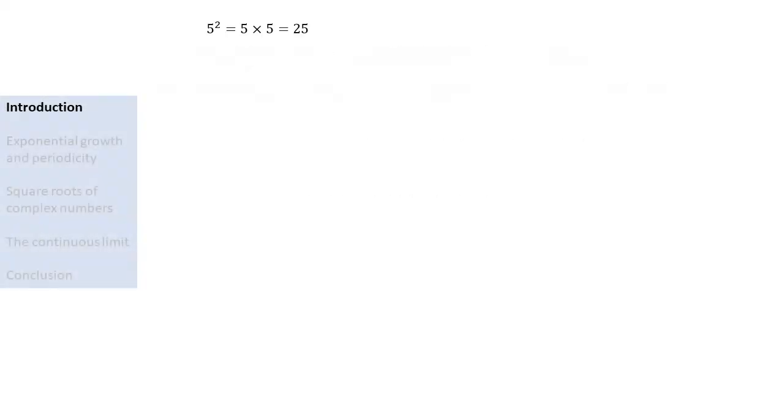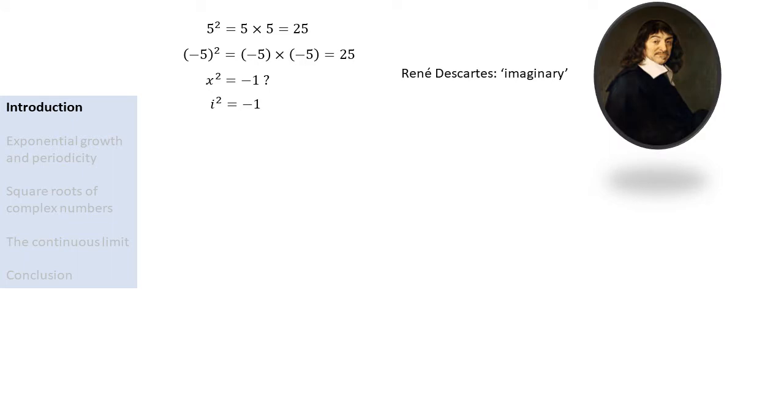If we take the square of a positive number, the outcome is positive. If we take the square of a negative number, the outcome will be positive as well. So is it ever possible to square a number and get a negative outcome? In the 16th century, mathematicians came up with the idea that there is indeed some number, let's call it i, whose square is minus 1. Quite understandably, some people were dismissive of this idea, saying that this number i is nothing more than imaginary.